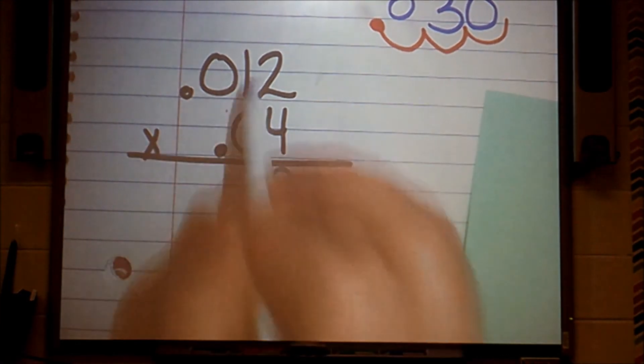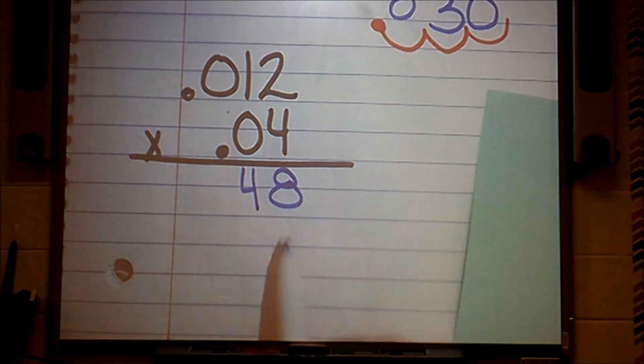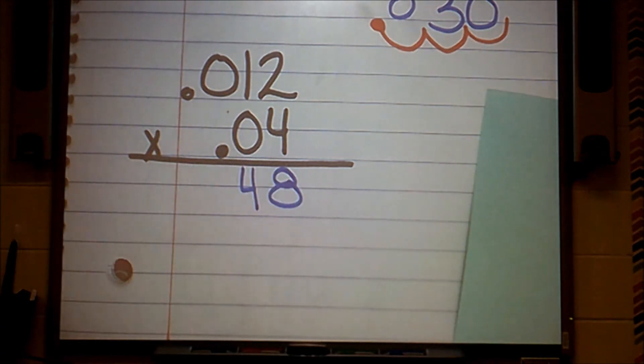4 times 2 gives me a product of 8. 4 times 1 gives me a product of 4. Obviously, that's going to give me zero, so I don't even have to do it. Here's my product.